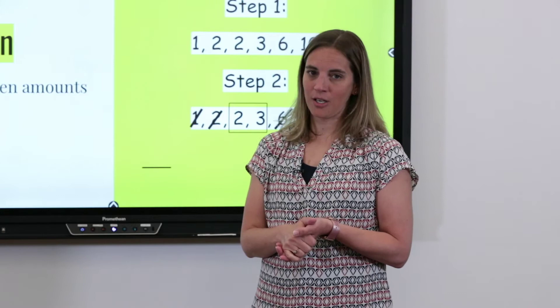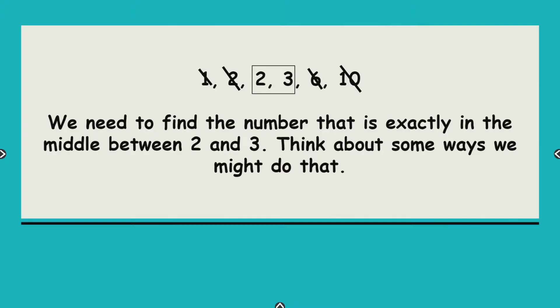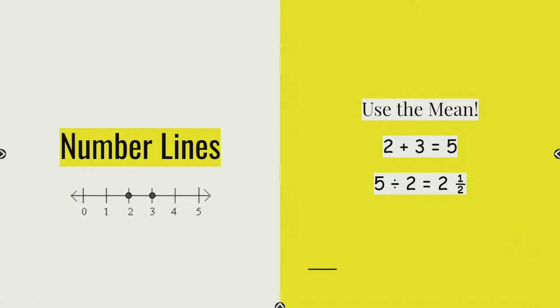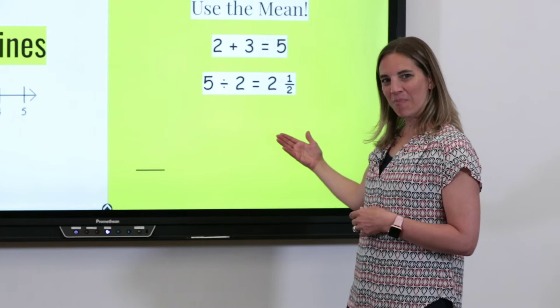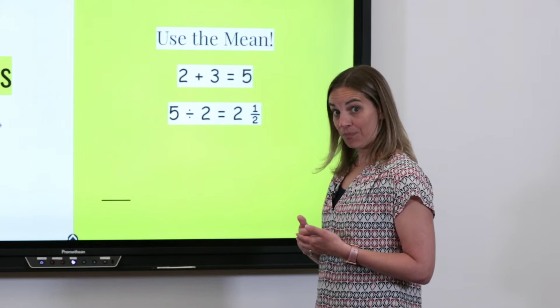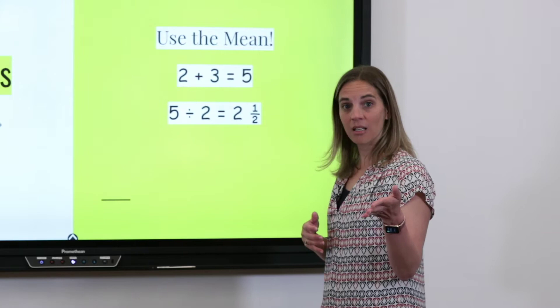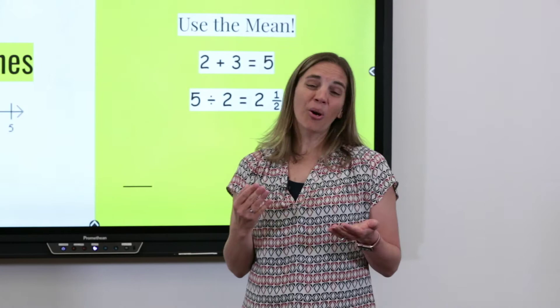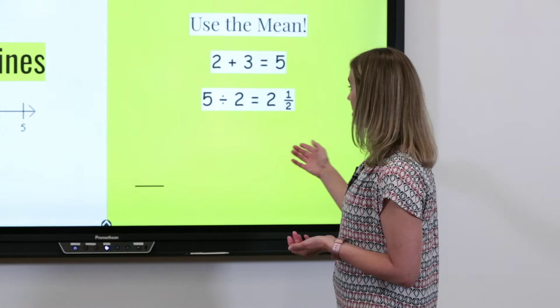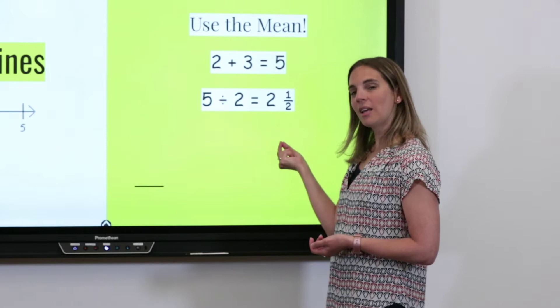Let me show you how you find that number. We need to find exactly what's between two and three. There are two ways. When we found the mean of a set of data, we added all our data points together and divided by the number of data points. You can do the same thing here — use the method for finding the mean to find the median. So my two middle numbers are two and three. If I add them together, I get five, and five divided by two gives you two and a half. So right between two and three is the number two and a half.